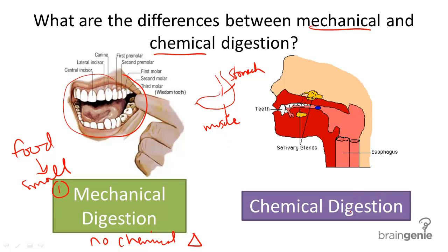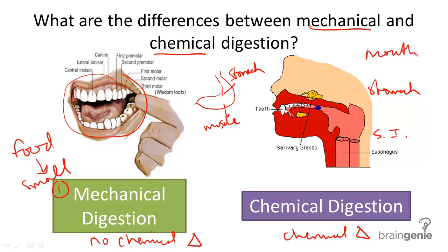The next type of digestion takes place in the mouth, stomach, and small intestines — and this is chemical digestion. Chemical digestion involves chemical changes of food. Even before you start eating, your brain actually signals for the release of certain enzymes in the mouth.